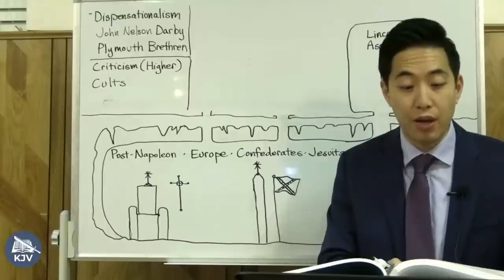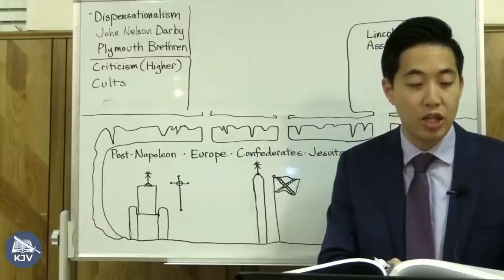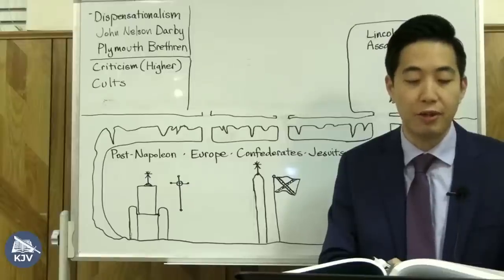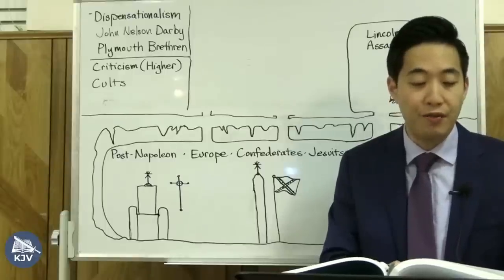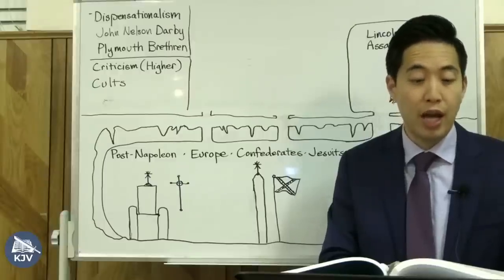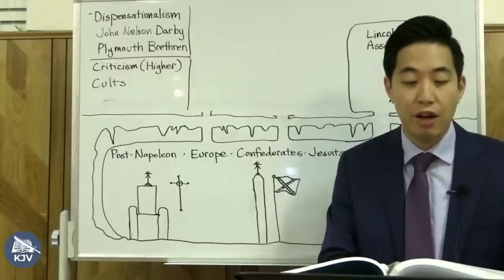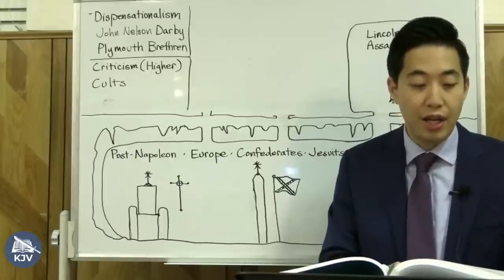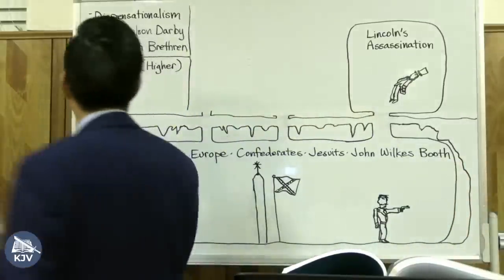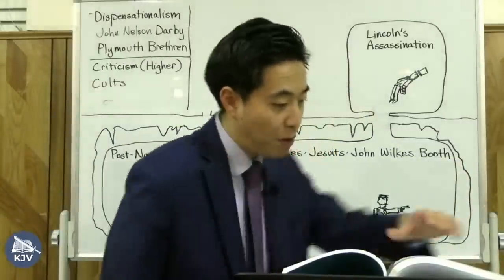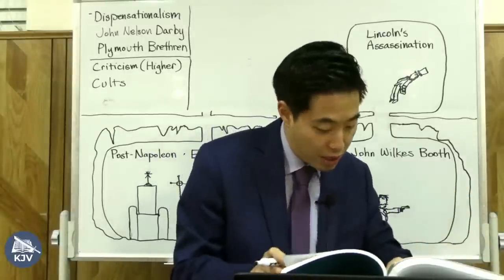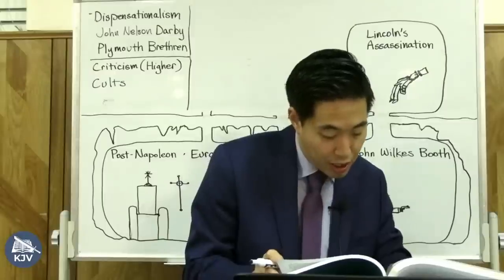According to General Thomas Harris, who investigated the assassination of President Lincoln, in his book Rome's Responsibility for the Assassination of Abraham Lincoln, and Charles Chiniqui in his 50 Years in the Church of Rome, Pope Pius IX oversaw the flooding of the United States with immigrants from poor Roman Catholic countries in a strategy of taking control of this country and derailing the intents of the Founding Fathers.